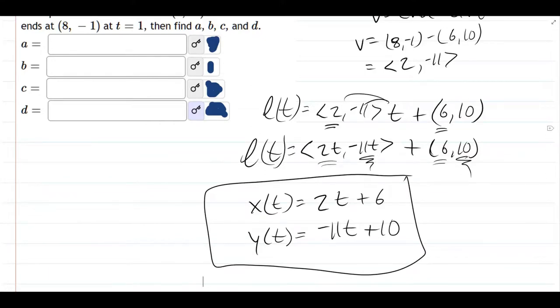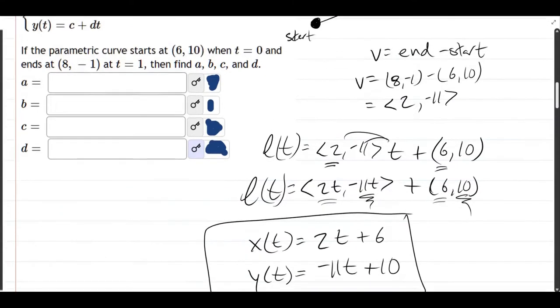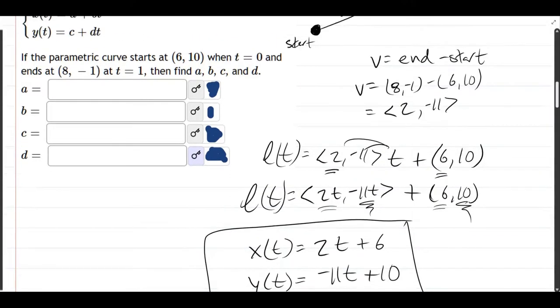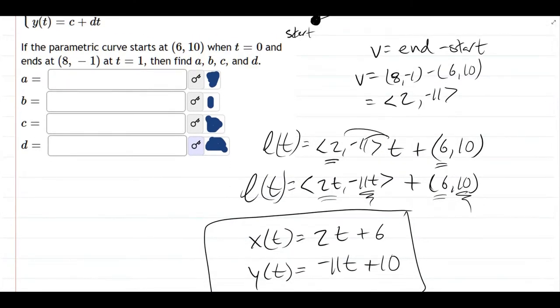The way they wanted the equation written, we'll look at y(t) first. So c plus dt. So c is the constant, which is 10 for us. And then d is the multiple in front of the time variable, which for us is negative 11.